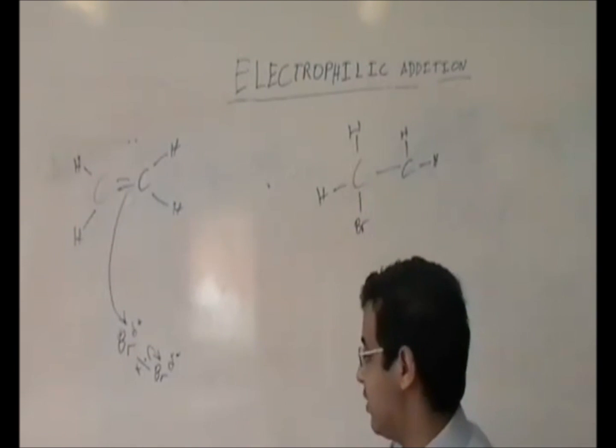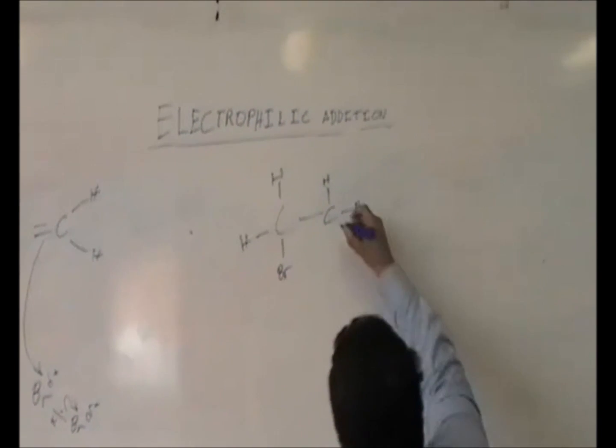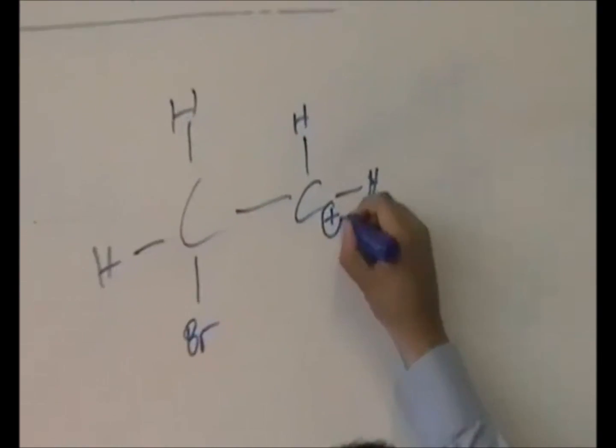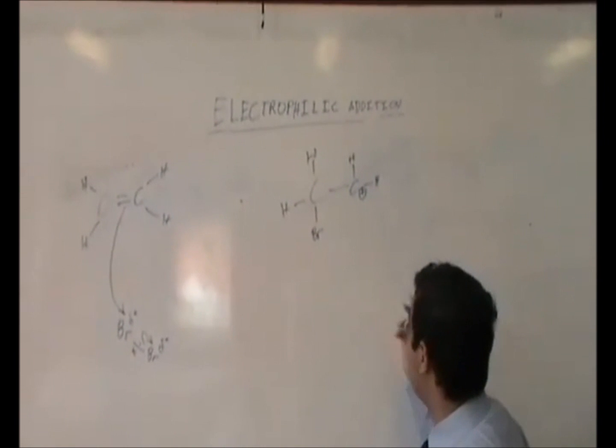There's an electron missing because that has been given to this bromine as a result of this electron pair movement. So this becomes a carbocation, i.e., a carbon that has one too few electrons. It needs an electron.